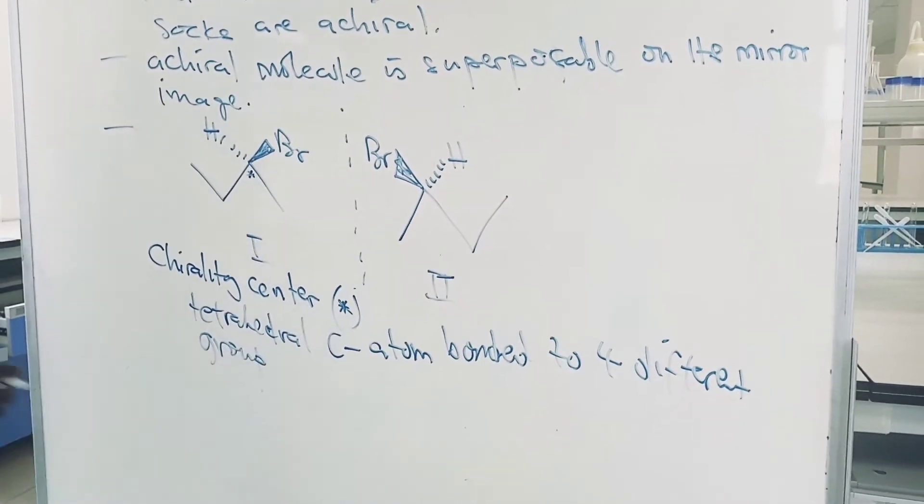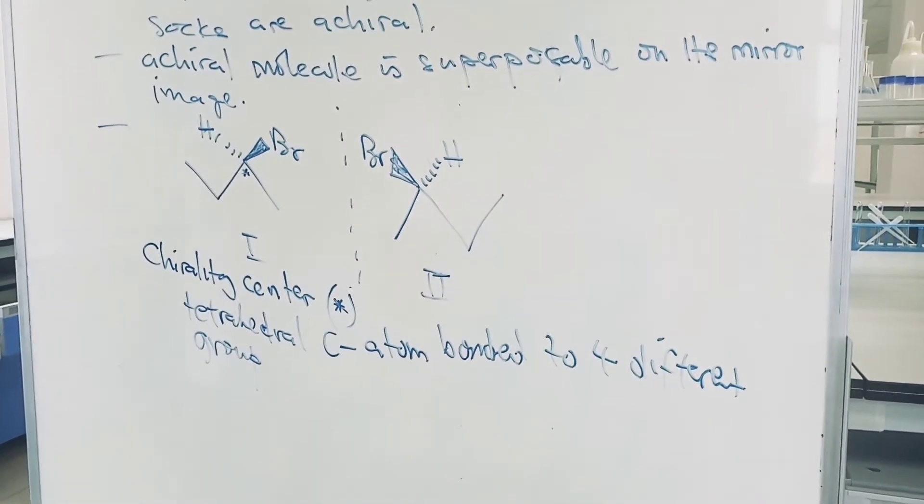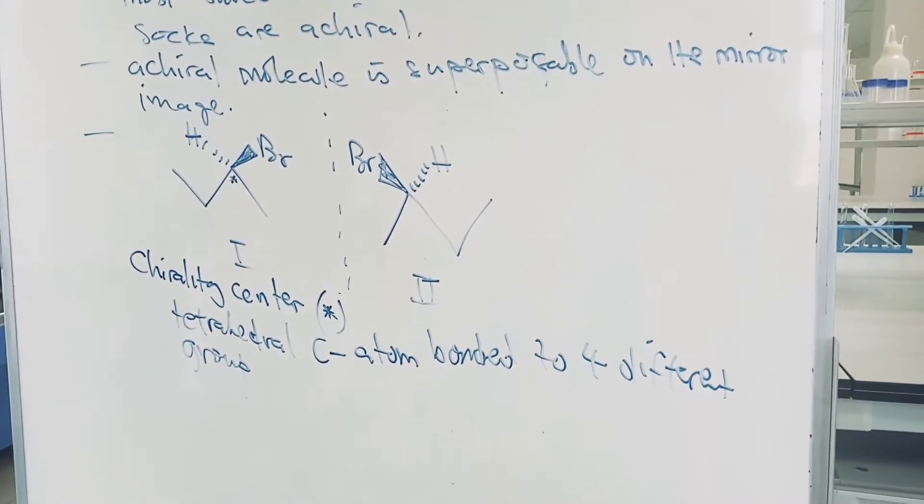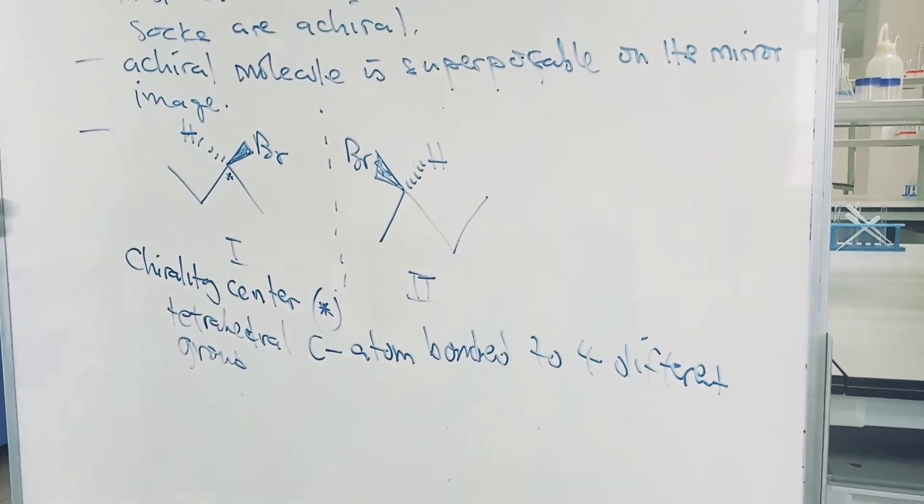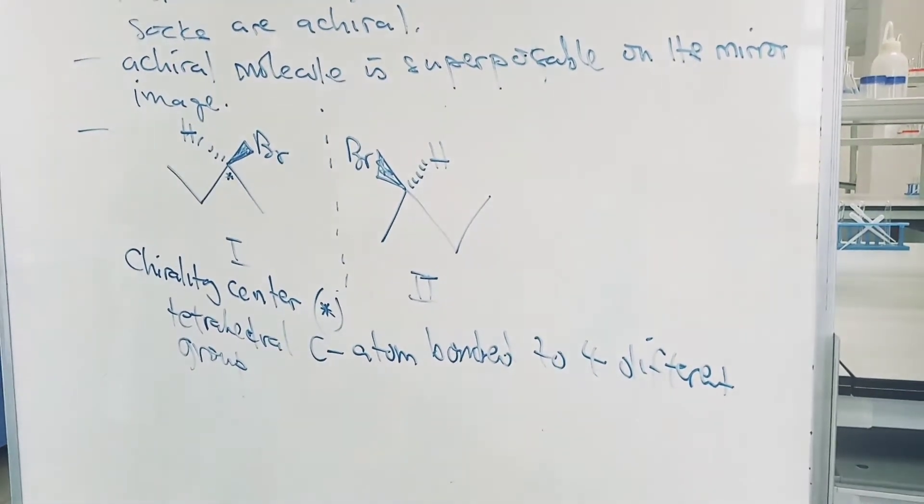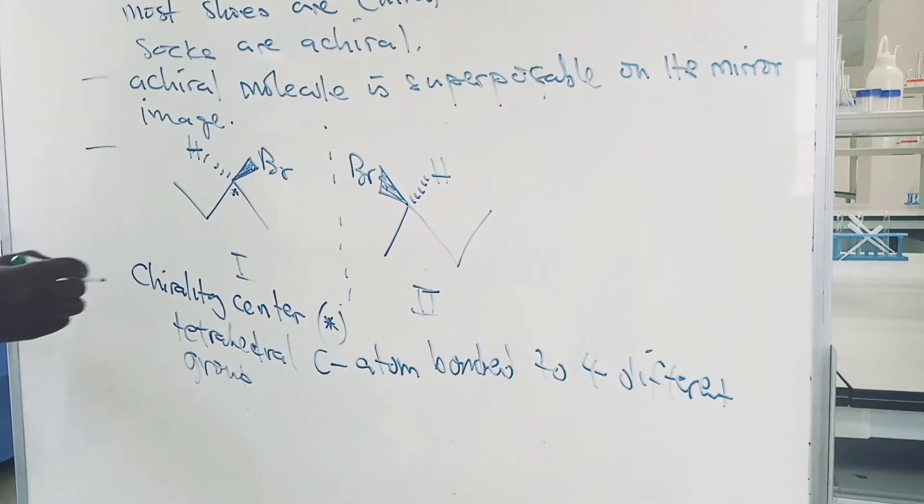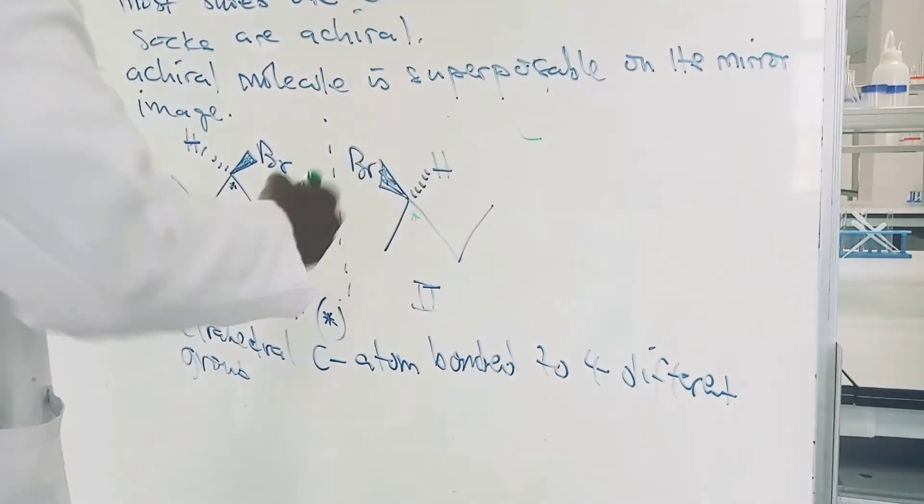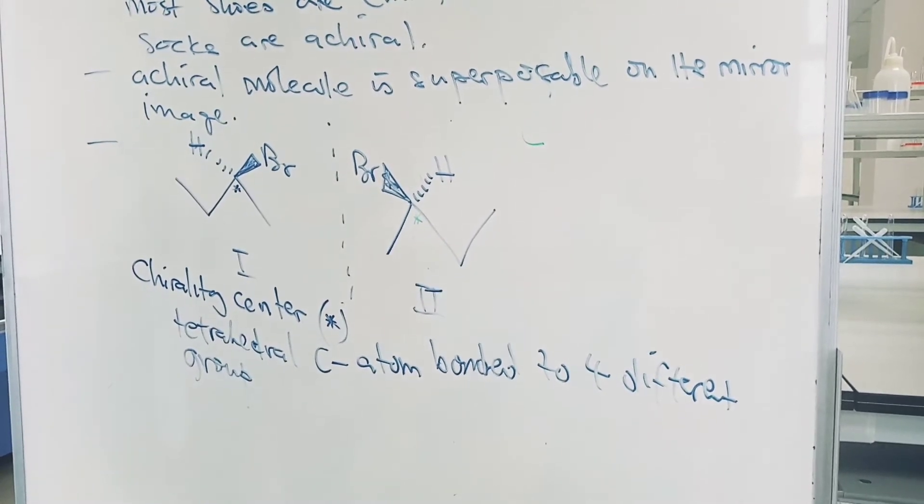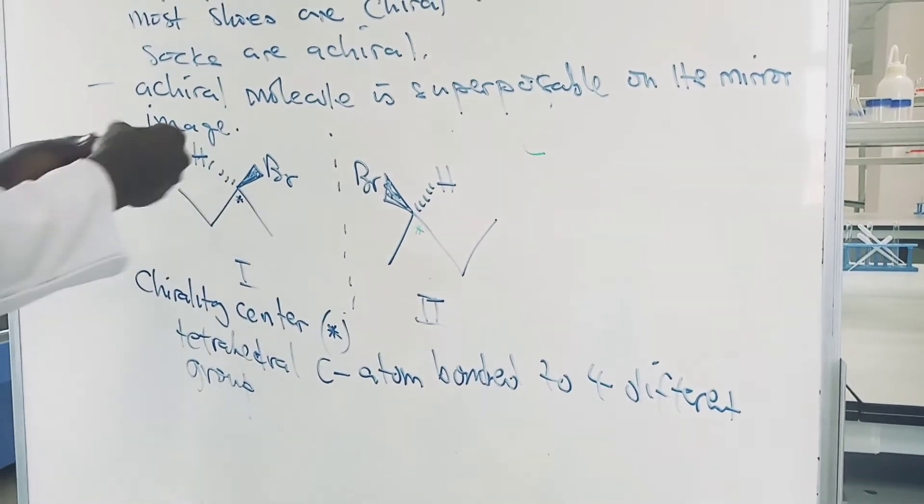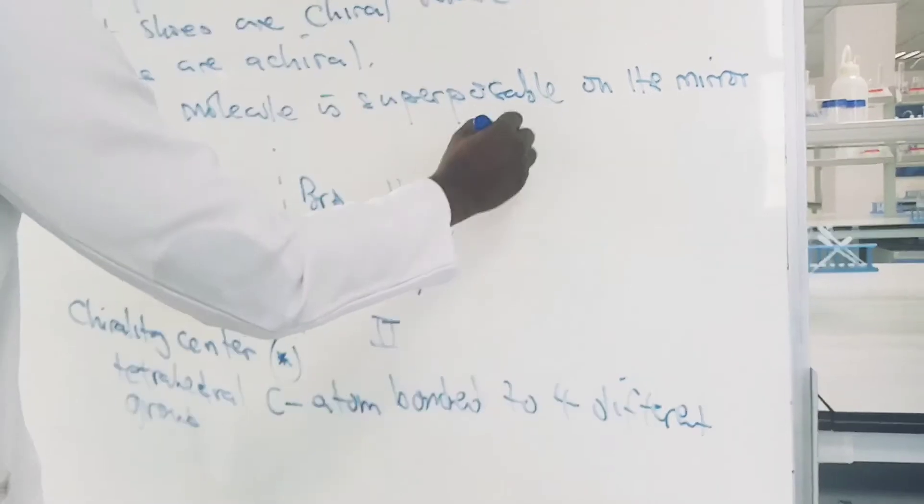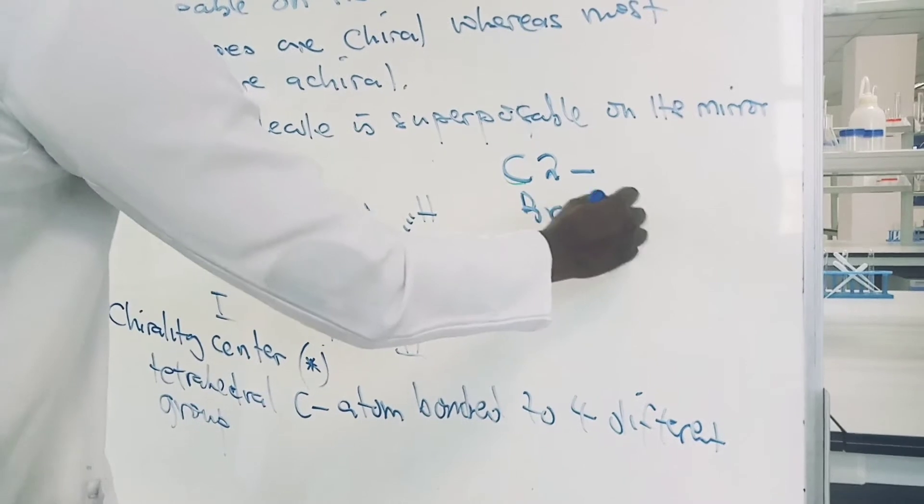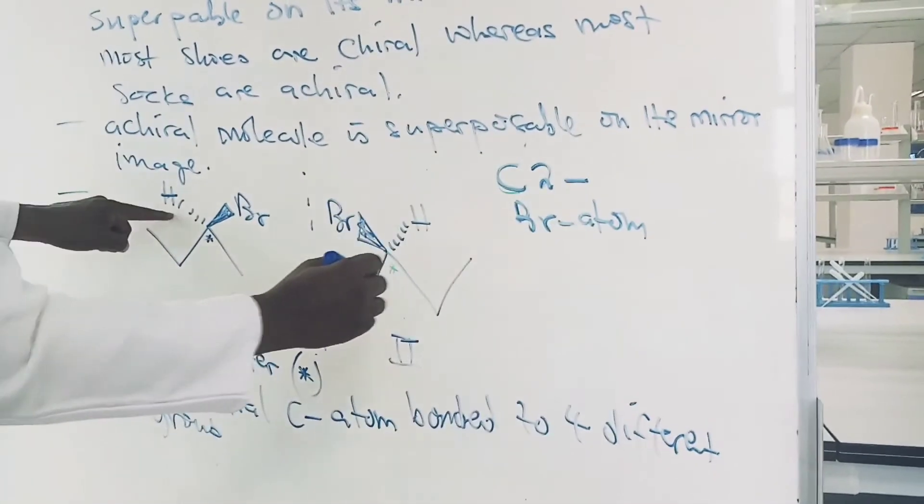So for it to qualify to be called a chiral center, the carbon atom must be bonded to 4 different groups. For example, carbon 2 in this case is bonded to bromine, then hydrogen.